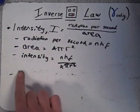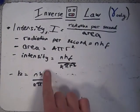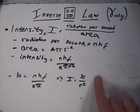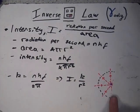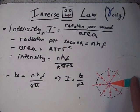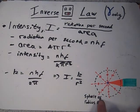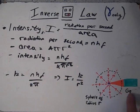From this, intensity can be calculated from the radiation energy per second, nHf, divided by the area, 4πr². Since nHf divided by 4π is constant, this equation can be rewritten as i equals k divided by r². This shows that gamma radiation varies with the inverse square of distance r.